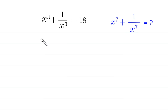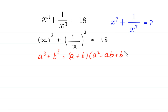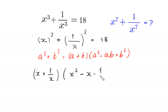This x cubed plus 1 over x cubed can be written as x cubed plus 1 over x whole cubed is equal to 18. By using the algebraic identity a cubed plus b cubed is equal to a plus b times a squared minus ab plus b squared, the left hand side will become x plus 1 over x times x squared minus x times 1 over x plus 1 over x squared is equal to 18.